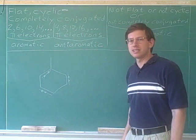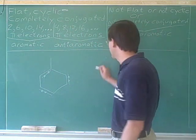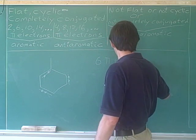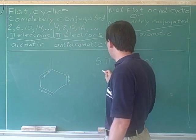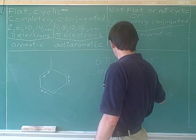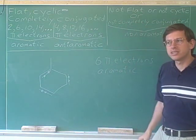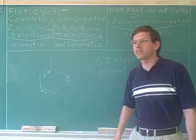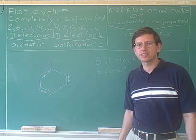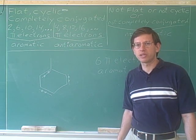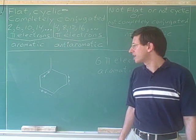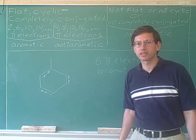Like an unsubstituted benzene, this has six pi electrons, so it's aromatic. The lesson again is that when we're counting the pi electrons, all we care about is the number of electrons in the side-to-side overlapping p orbitals in the ring. We don't care about what's happening on the substituents outside the ring.